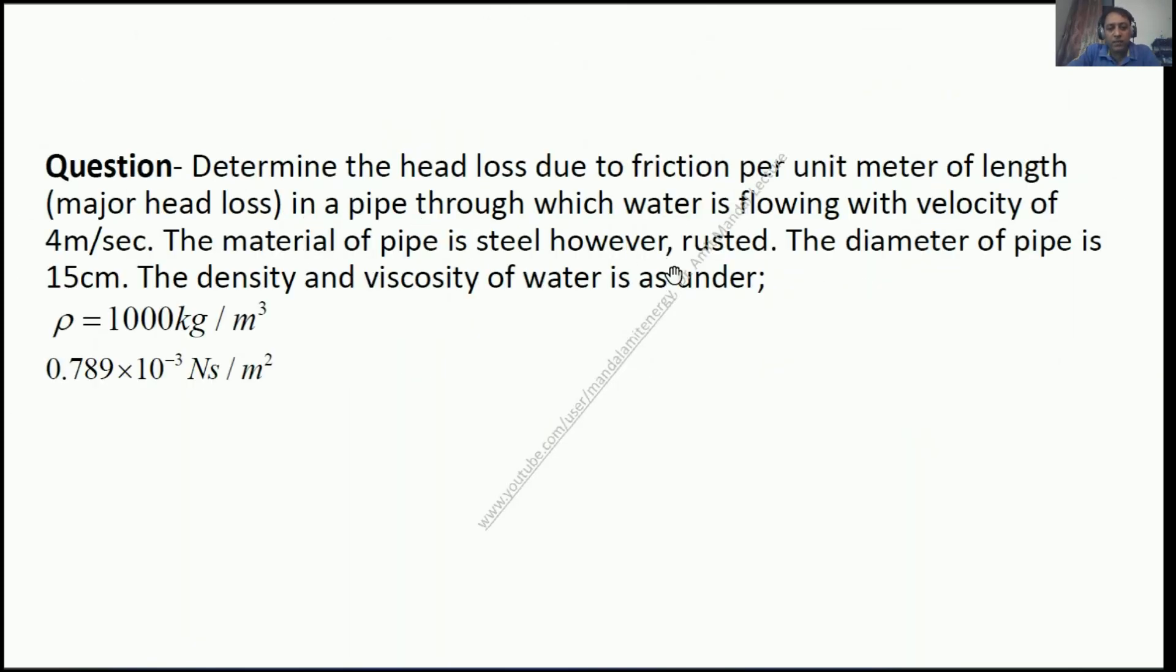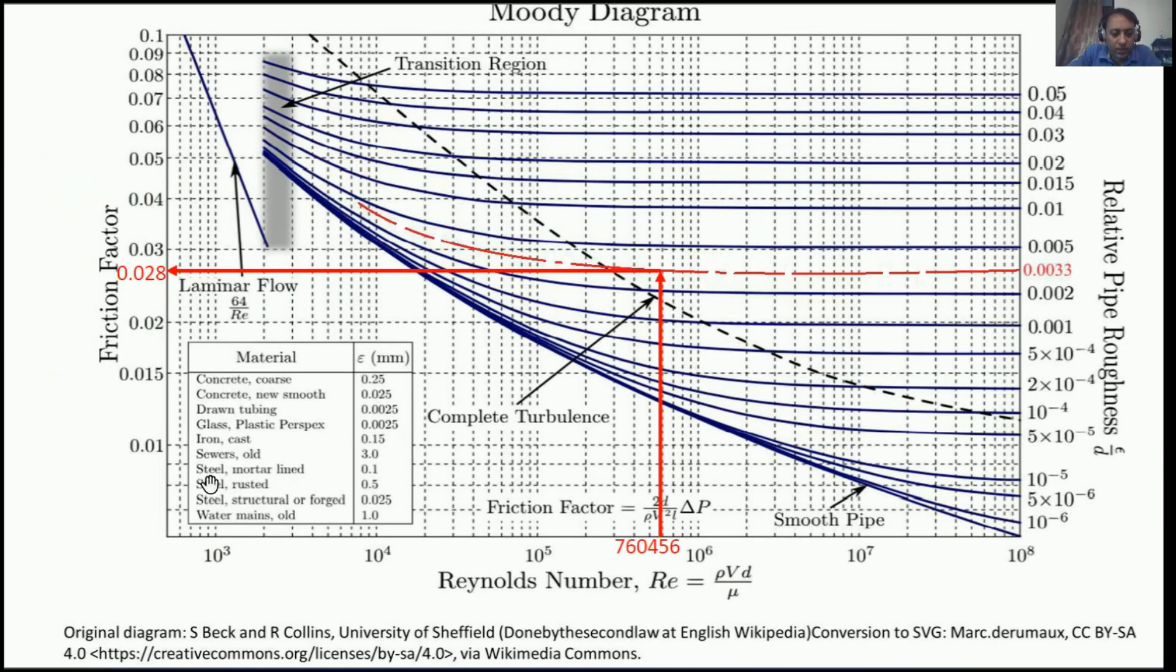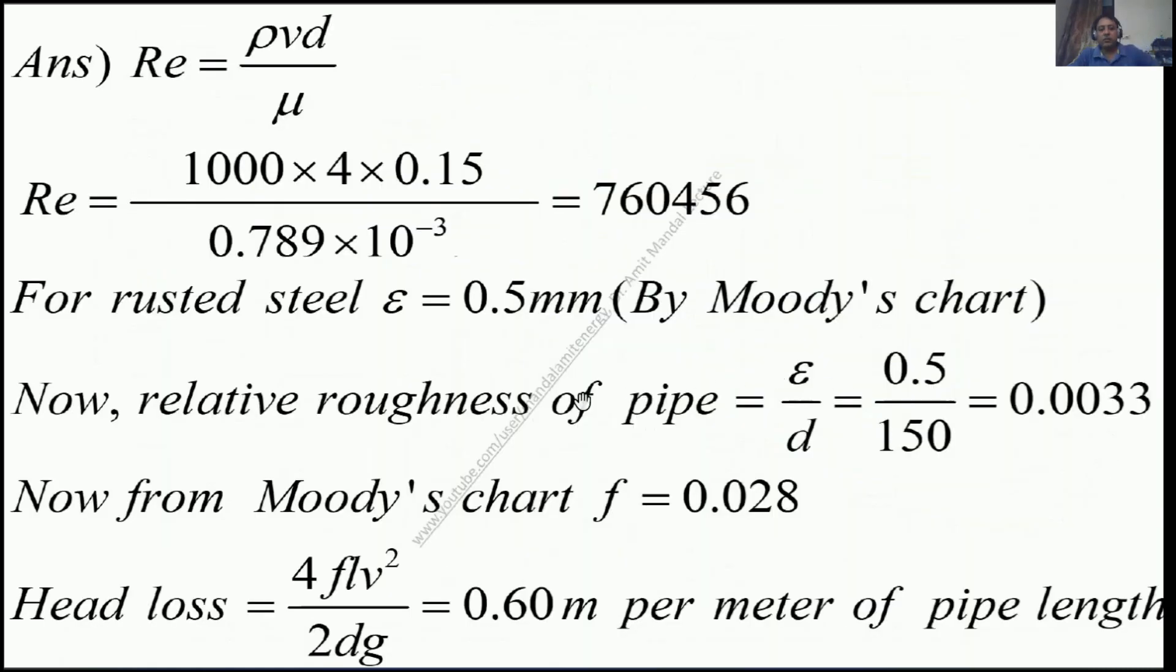Now the material of pipe is rusted steel. Going to Moody's chart, you can see that for rusted steel, epsilon (the roughness of the pipe in mm) is 0.5 mm. Now you have to find the relative pipe roughness, which equals the roughness of pipe divided by the diameter of pipe. For rusted steel, ε = 0.5 mm and diameter is 150 mm (since ε is in mm, diameter must also be in mm). So ε/d = 0.5/150 = 0.0033.